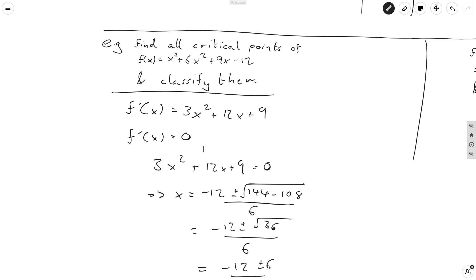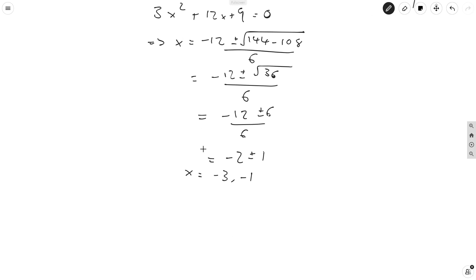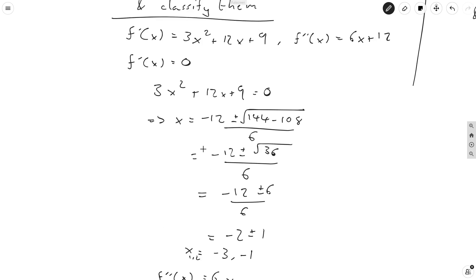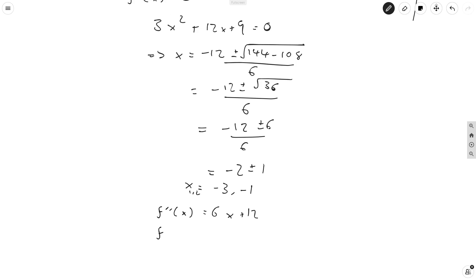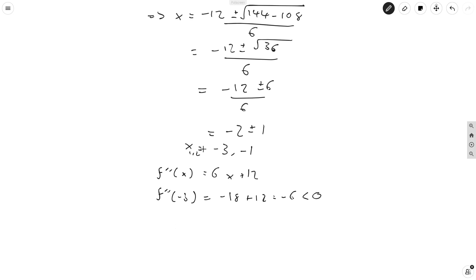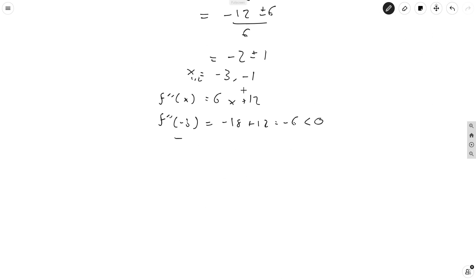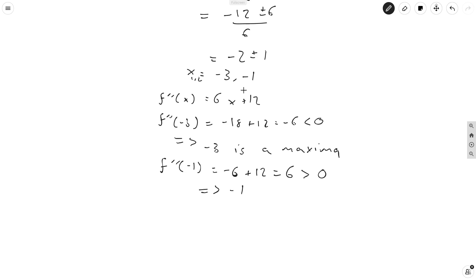Now the question also asks us to classify them, so we actually need f double prime. To get f double prime we just differentiate f prime, which gives us 6x plus 12. So to classify, we evaluate at our critical points. f double prime of minus 3 equals minus 18 plus 12, which equals minus 6, which is strictly negative. Remembering our rule, when the second derivative is negative, we have a maxima — so minus 3 is a maxima. And f double prime of minus 1 equals minus 6 plus 12, which equals 6, which is positive.